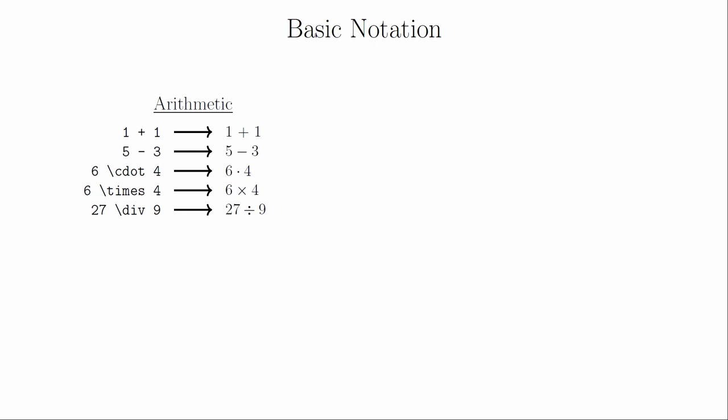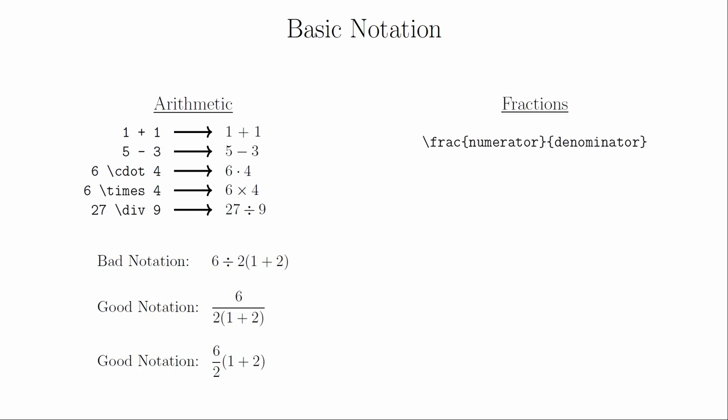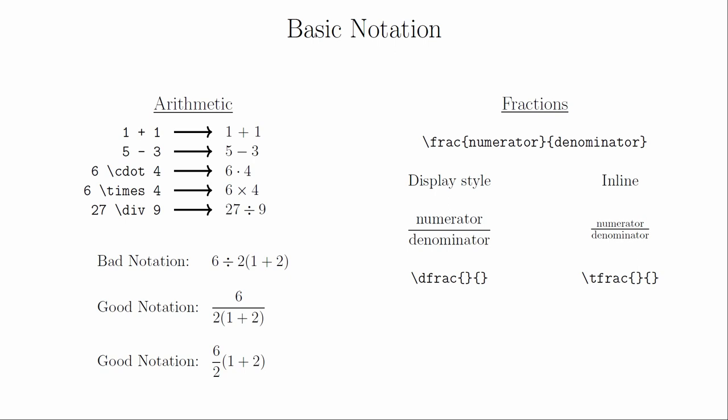We will now look at mathematical notation itself — remember that this must always be inside of math mode. For addition and subtraction, you simply use the standard plus and minus keys. For multiplication, you do not want to use the asterisk. Instead, use cdot to make a multiplication dot, or times if you want the big X notation. The division sign can be created using div, but it can lead to unfortunate and misleading notation — it is usually better to use fractions. To create a fraction in math mode, use frac, where the contents of the first brackets go in the numerator and the second brackets in the denominator. You can use dfrac or tfrac to force display-style or inline-style fractions.